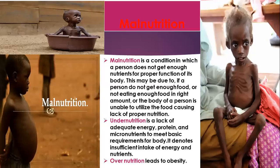Undernutrition means lack of adequate energy — protein and micronutrients — to meet basic body requirements, denoting insufficient intake of energy and nutrients. Different foods supply different amounts of energy. A person taking a balanced diet will generally consume the same number of calories used up, maintaining good health. An improper diet — where nutrients are either not enough or too much — is called malnutrition. Malnutrition may be caused by both undernutrition and over-nutrition.